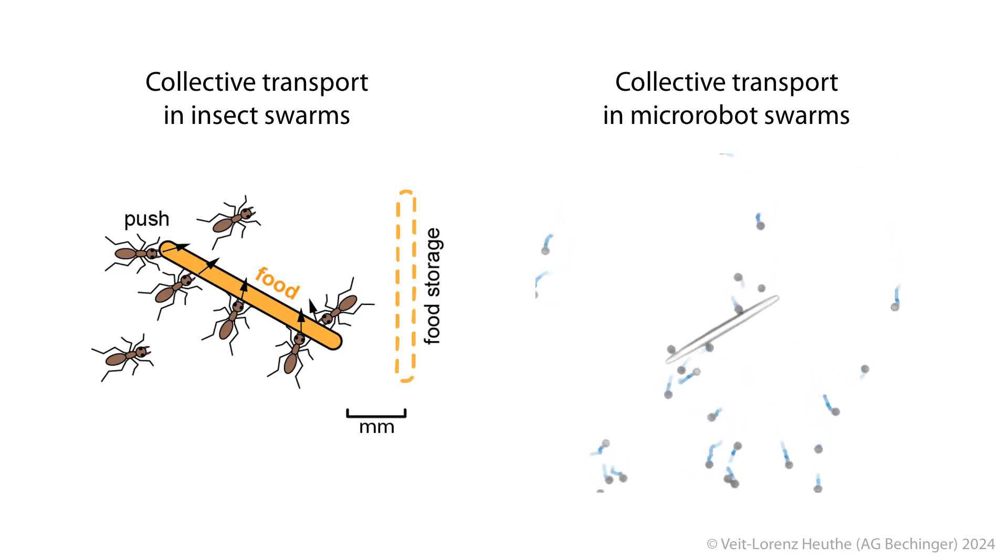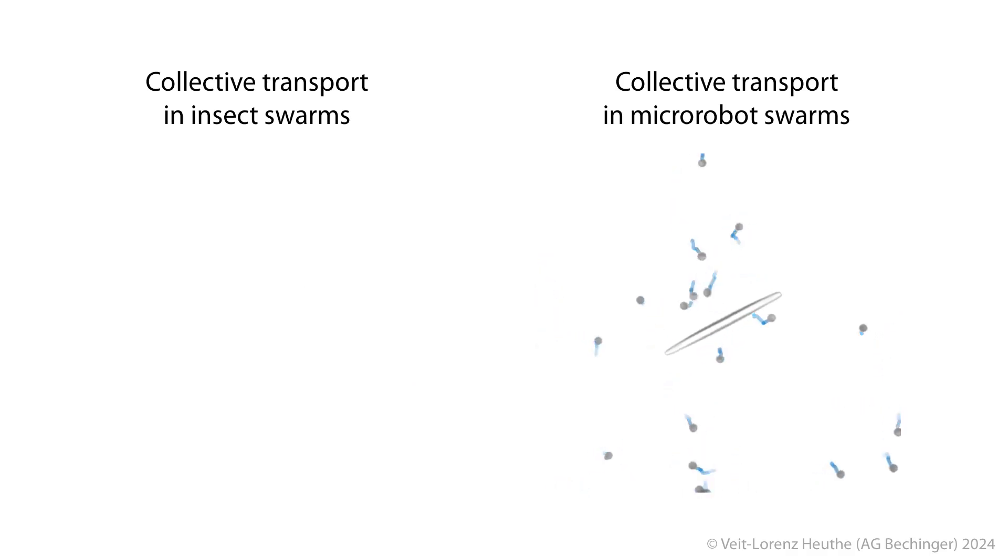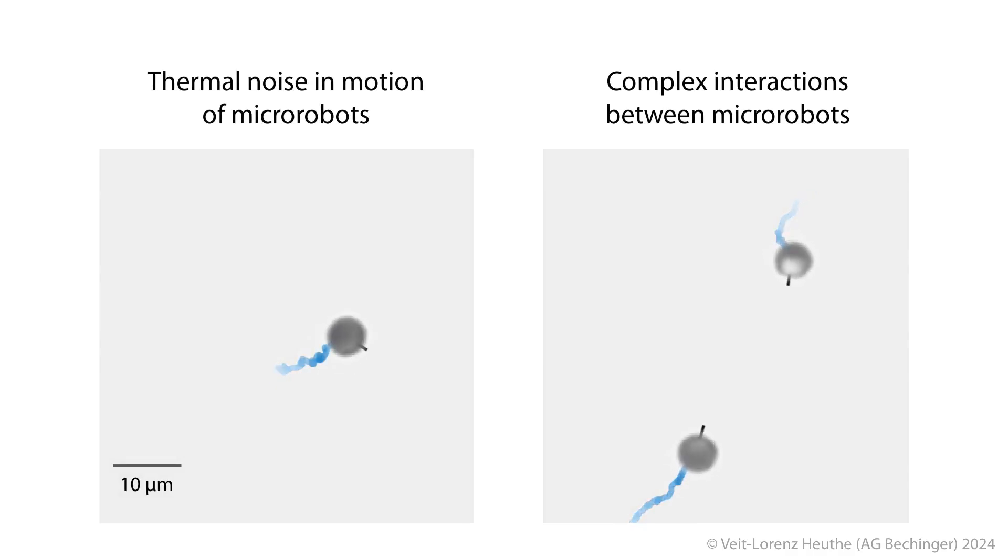But controlling swarms of such tiny robots presents a huge challenge. At this scale, micro-robots are easily disturbed by their environment. They experience significant thermal noise, which disrupts their movements, and their interactions with each other are complex and difficult to predict.